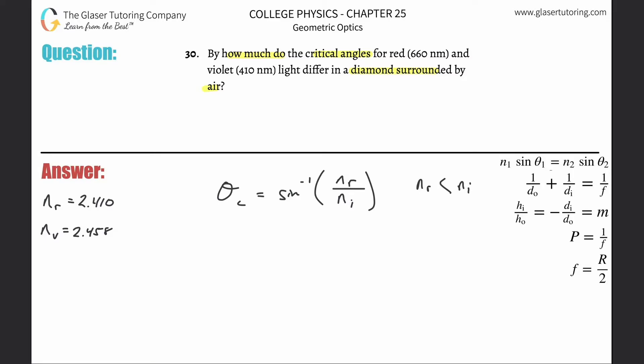Diamond is surrounded by air, so we need the values for the index of refraction of red light and violet light in diamond. They're different—both types of light, but with different wavelengths and therefore different indices of refraction.